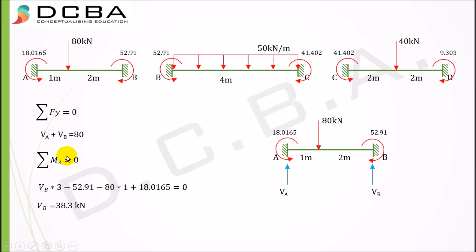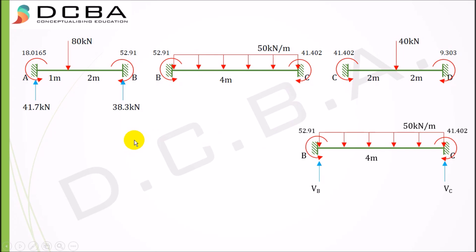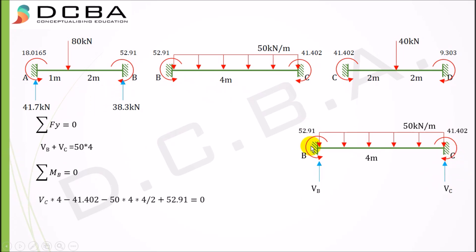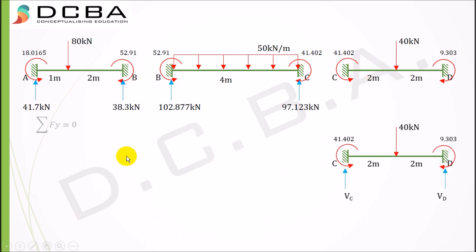Now analyzing segment BC. From summation of FY = 0: VB + VC = 50 × 4 = 200 kN (UDL spanning 4 meters). From summation of MB = 0: VC × 4 − 41.402 − 50 × 4 × (4/2) + 50 × (4/2) + 52.91 = 0, giving VC = 97.123 kN and VB = 102.877 kN. Then analyzing segment CD: summation of FY gives VC + VD = 40. From summation of MC = 0: VD × 4 − 9.303 − 40 × 2 + 41.402 = 0, giving VD = 11.9795 kN and VC = 28.0248 kN.